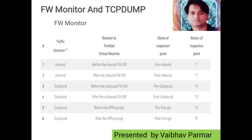Now let's understand the built-in tools available to see various stages where packets reside. When packets flow through the firewall, you can use TCP dump and fw monitor, which are built-in tools available inside the checkpoint firewall gateways and the management server. Let's understand fw monitor — fw monitor gives you packet stages with the help of inspection points.